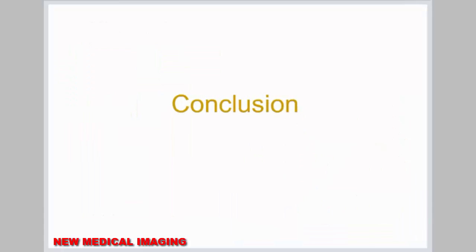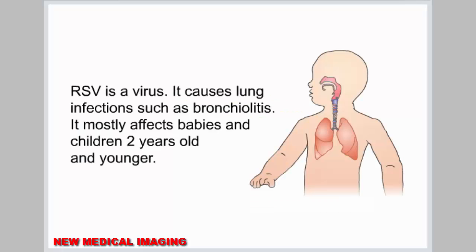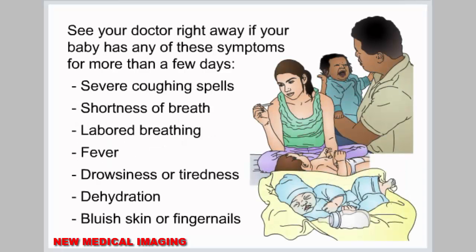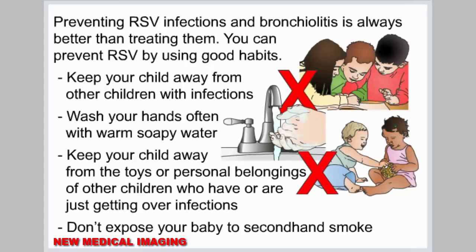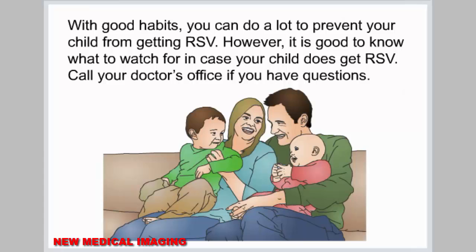RSV is a virus that causes lung infections such as bronchiolitis. It mostly affects babies and children two years old and younger. See your doctor right away if your baby has any of these symptoms for more than a few days: severe coughing spells, shortness of breath, labored breathing, fever, drowsiness or tiredness, dehydration, or bluish skin or fingernails. Preventing RSV infections and bronchiolitis is always better than treating them. Keep your child away from other children with infections, wash your hands often, keep your child away from belongings of infected children, and don't expose your baby to secondhand smoke. With good habits, you can do a lot to prevent your child from getting RSV — but it is good to know what to watch for in case your child does get RSV. Call your doctor's office if you have questions.